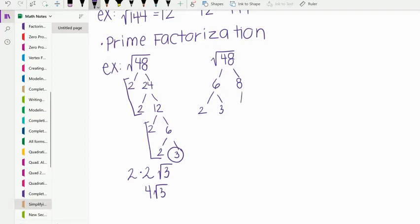Now we do 8. We know that 2 times 4 is 8, but that branch is not done because 4 is not a prime number. So we keep going and get 2 and 2. Looking at the prime numbers, we have 2, 3, 2, and 2, and 2. We look for pairs: a pair of 2s, a pair of 2s, and a lonely 3. So you end up getting the same thing, 4 root 3.